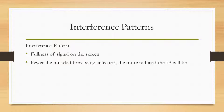When we're talking about interference patterns, we're talking about the fullness of signal on the screen. The fewer the muscle fibres being activated, the more reduced the interference pattern will be. These have very different characteristics in the pathological states between neuropathies and myopathies, and you can see further information and explanations on these by following the iCard above.